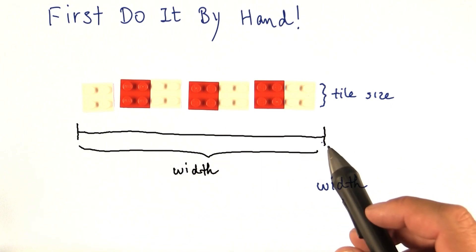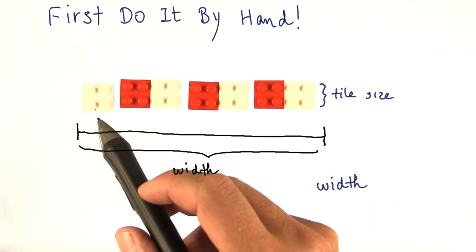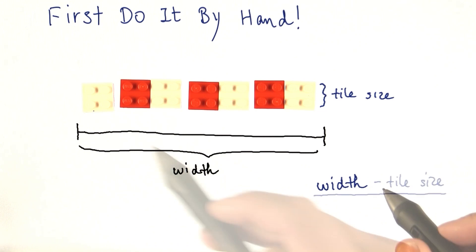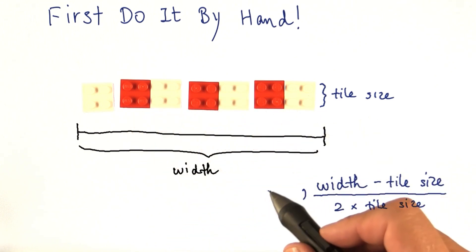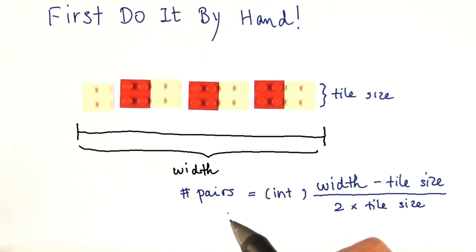We started with the width of the floor, subtracted the size of the first white tile, divided by the sizes of the pairs, took the integer part, and that gave us the number of pairs.